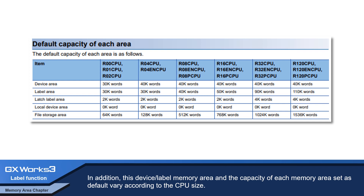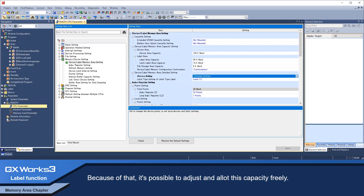This device label memory area and the capacity of each memory area set as default vary according to the CPU size. Because of that, it is possible to adjust and allot this capacity freely.